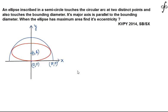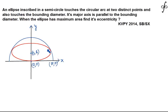Let's discuss this problem which appeared in KVPY 2014 under the stream SB or SX. The question says that an ellipse is inscribed in a semicircle, touching the circular arc at two distinct points and the bounding diameter, with its major axis parallel to the bounding diameter. When the ellipse has maximum area, we need to find its eccentricity.